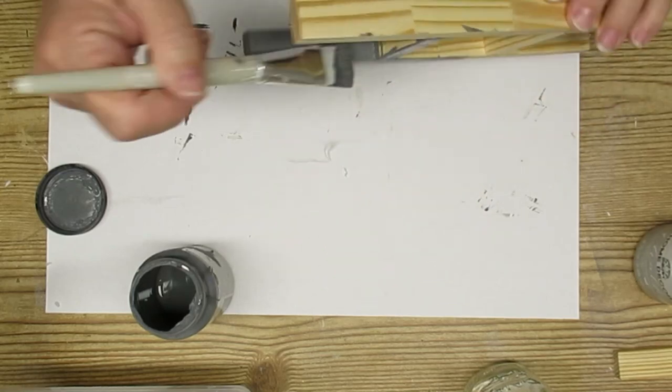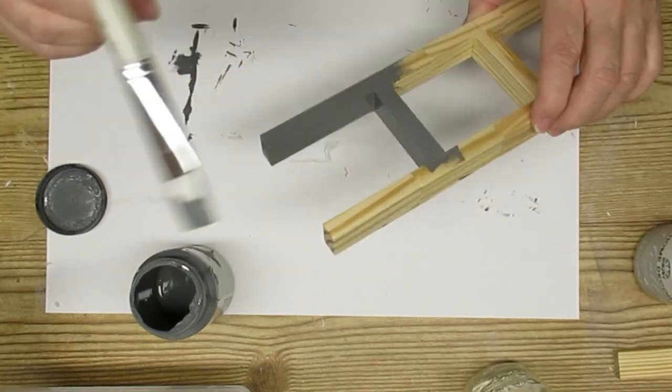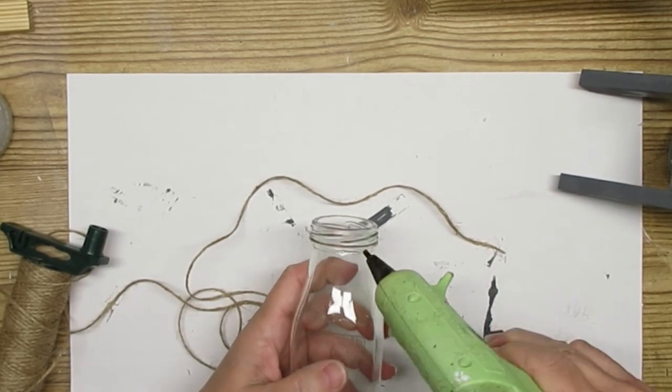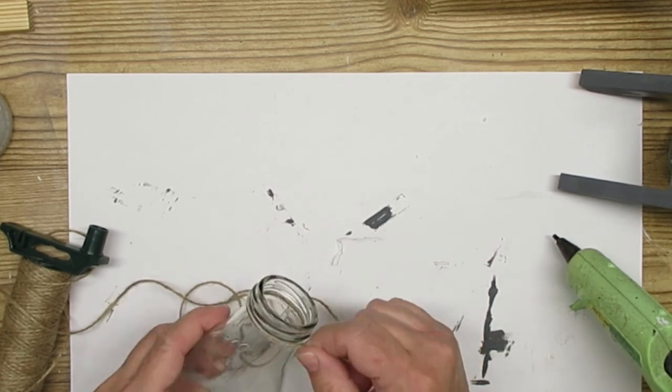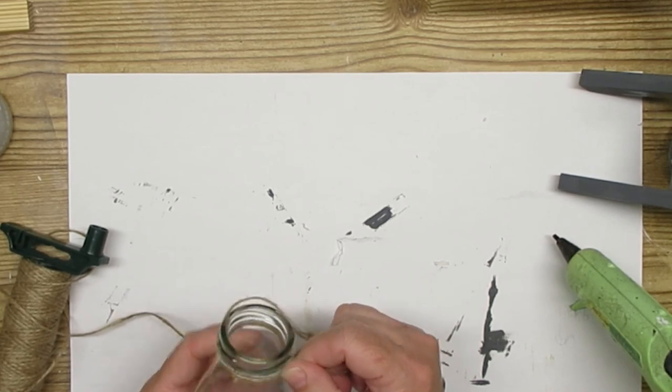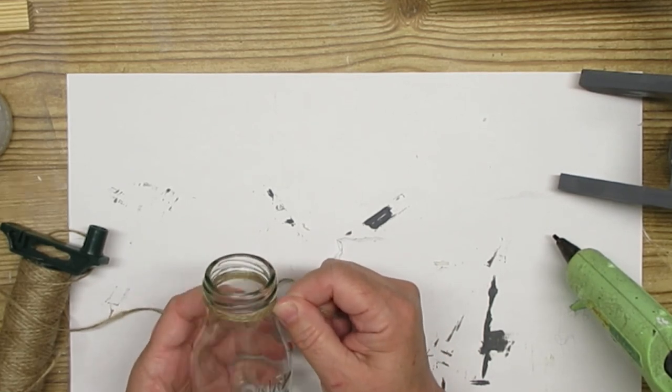Now I'm giving this one coat of the gray as well. Now I'm just going to add some Dollar Tree twine to the top of the jars, just like in the photo, and I'm going to wrap it around five times and then hot glue it in place.